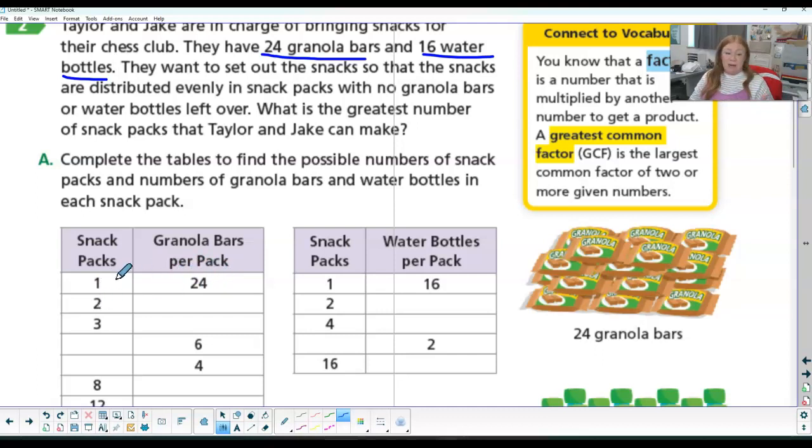We can make 1 times 24 is 24. We're trying to make 24 granola bars. If I make two packages and split them in half, then there would be 12 in each pack. 3 goes into 24 eight times. Can 4 go into 24? Yes, it can, 6 times.